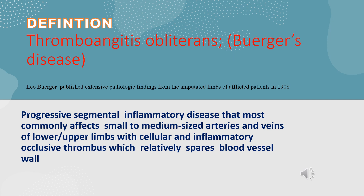When describing Buerger's Disease, we should remember three basic points to differentiate it from other types of vasculitis. First, the disease affects small and medium-sized vessels — arteries and veins. Second, the disease is characterized by formation of intraluminal hypercellular and inflammatory thrombus. Third, Buerger's Disease spares the internal elastic lamina of the vessel wall.